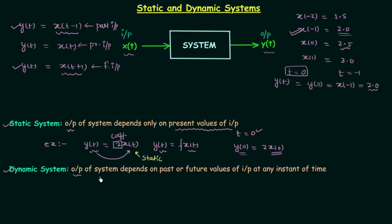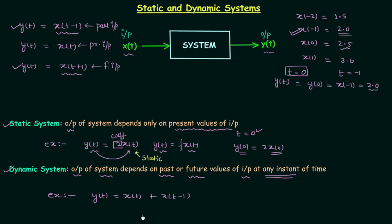A dynamic system is one where the output depends on past or future values of input at any instant of time. This point — at any instant of time — is important. Even if the output also depends on the present value, as long as it depends on past or future values at some instant, it is dynamic. For example, y(t) = x(t) + x(t−1): the output depends on the present value x(t) as well as the past value x(t−1), so this system is dynamic in nature.